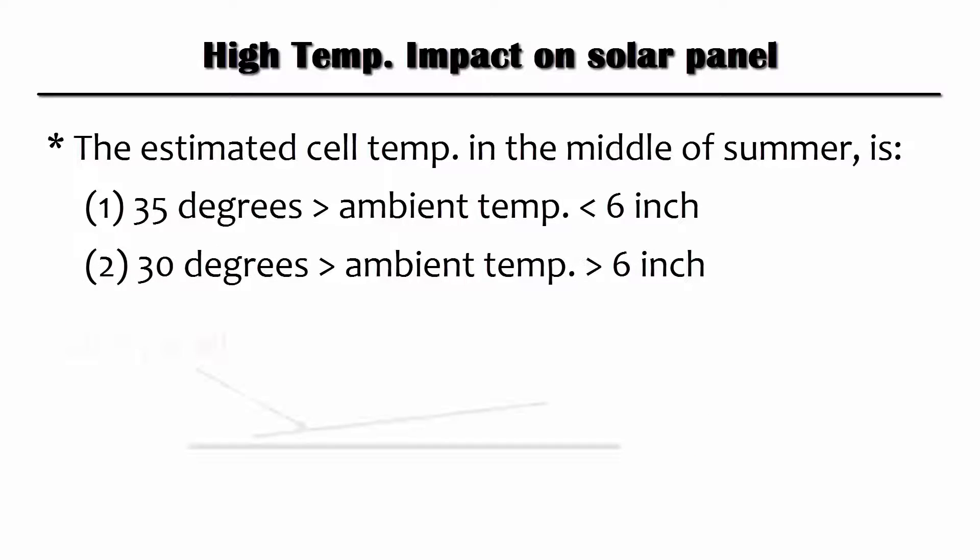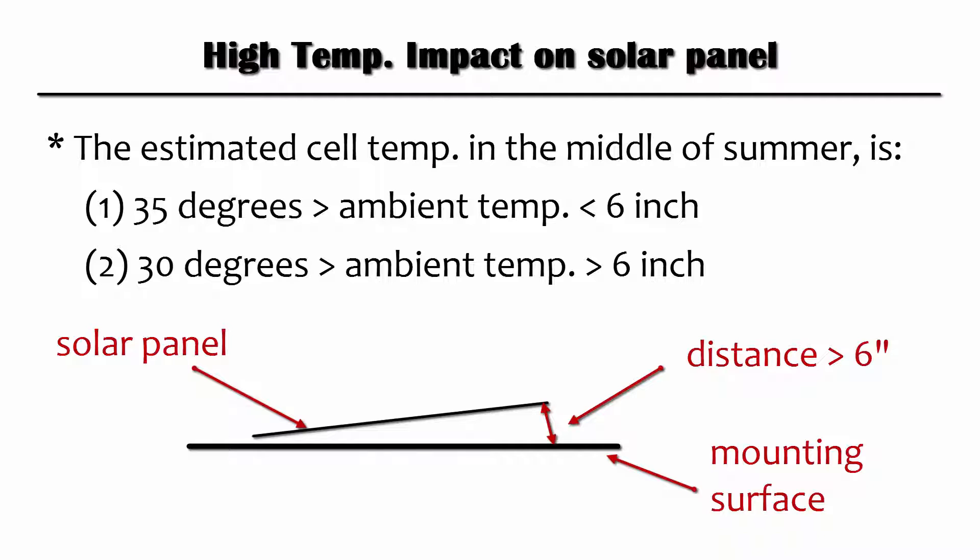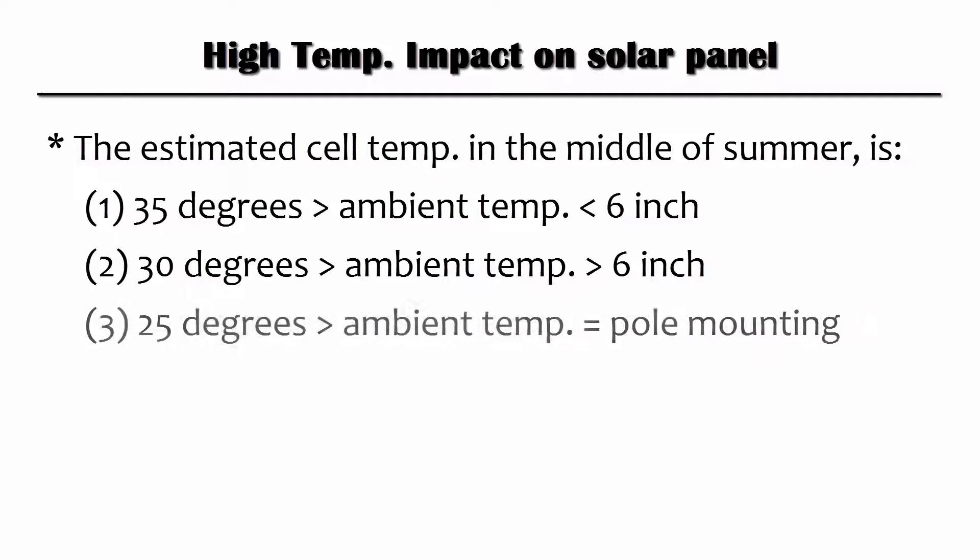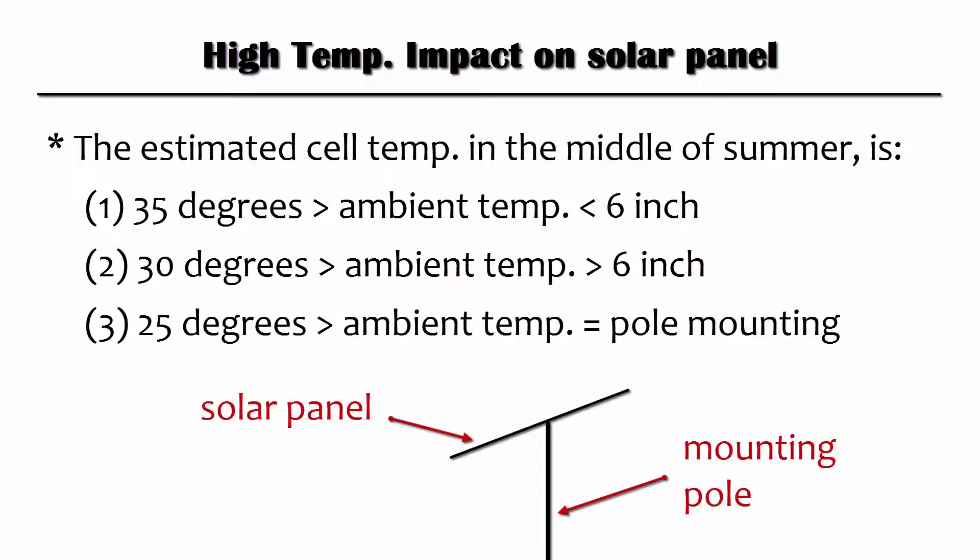It's 30 degrees above ambient if the distance is more than 6 inches, and 25 degrees if the panel is on top of a pole.